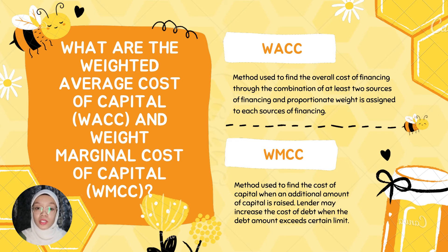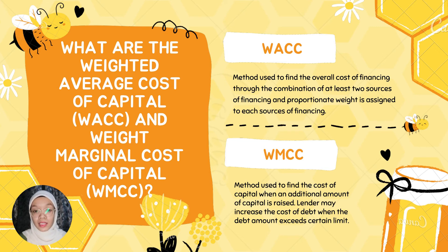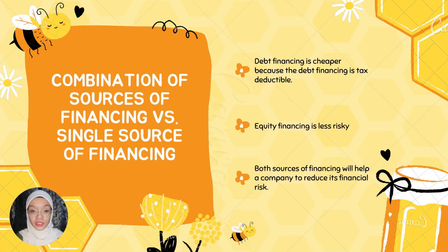What are the weighted average cost of capital (WACC) and the weighted marginal cost of capital (WMCC)? Weighted average cost of capital is a method used to find the overall cost of financing through a combination of at least two sources of financing and the proportion assigned to each source. Weighted marginal cost of capital is a method used to find the cost of capital when an additional amount of capital is raised, which may increase the cost of debt when the debt amount has reached a certain limit.